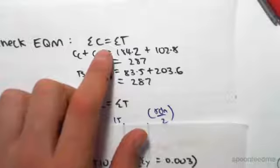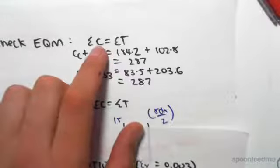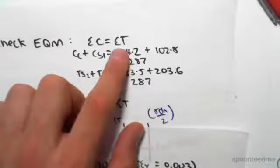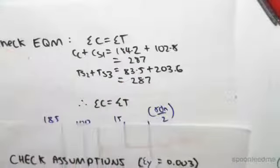The property for pure bending is that the compression equals the tension. So the sum of the compression equals the sum of the tension. 287 equals 287. So what we've done is most probably correct.